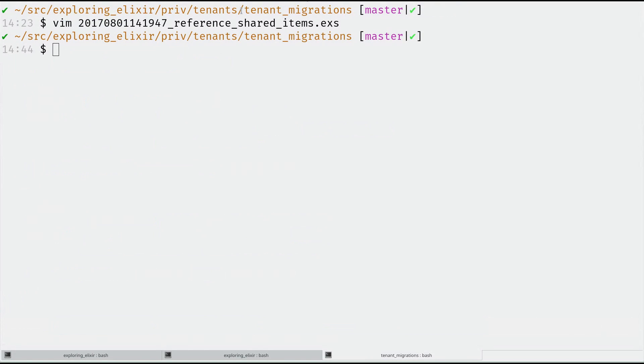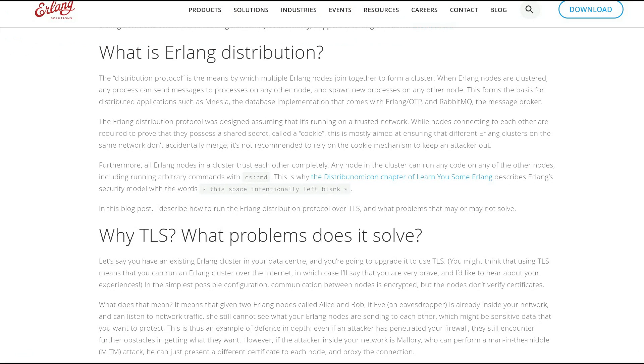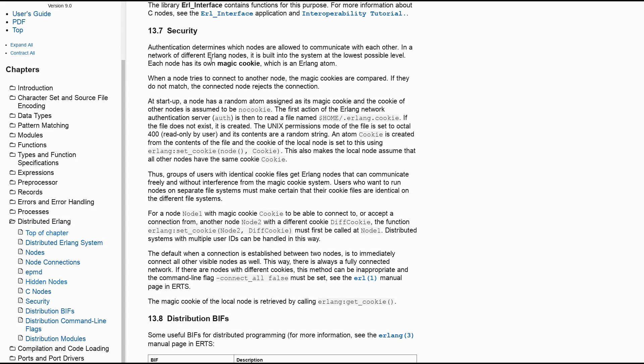The second thing I want to talk about is some of the caveats with Erlang distribution. So we had done some auto clustering and I mentioned there that there are some issues with security and scalability. So just to talk really quickly about it, if you look at the security section in the distribution part of the Erlang documentation, it mentions that it uses a magic cookie, which is an Erlang atom, and that's pretty much all it describes in terms of security. That's because that's pretty much all there is.